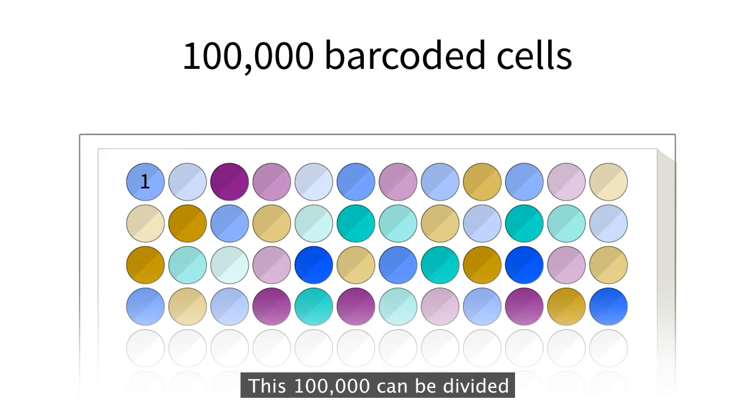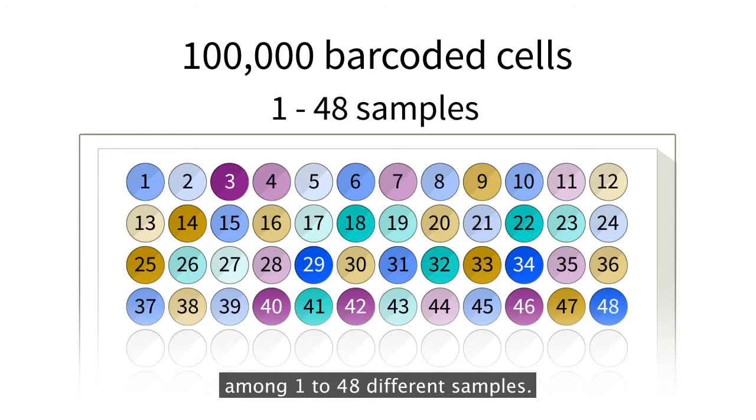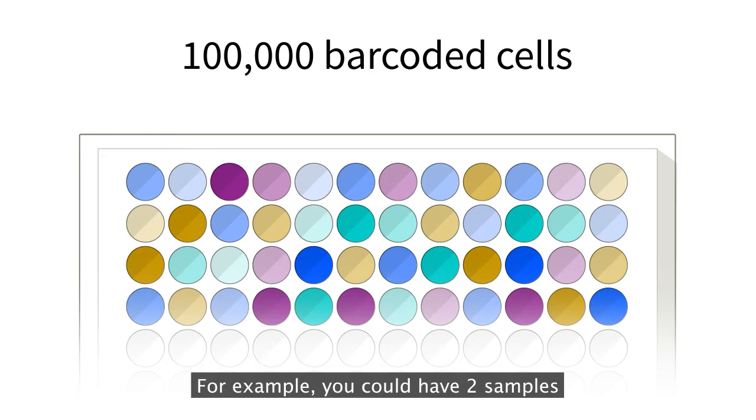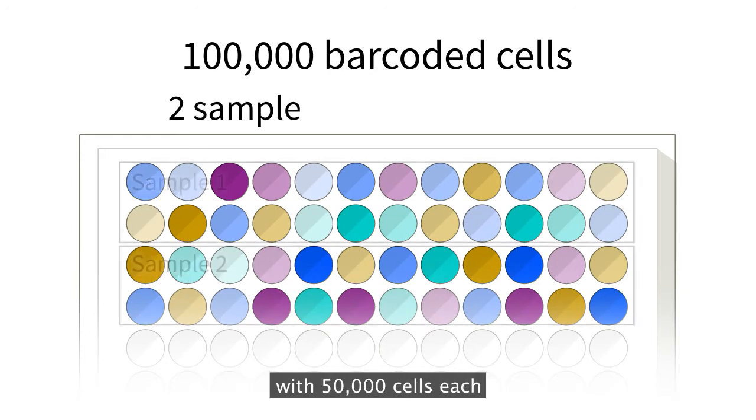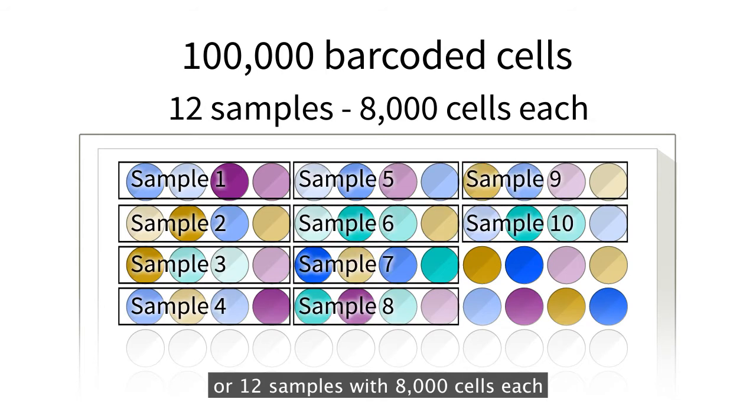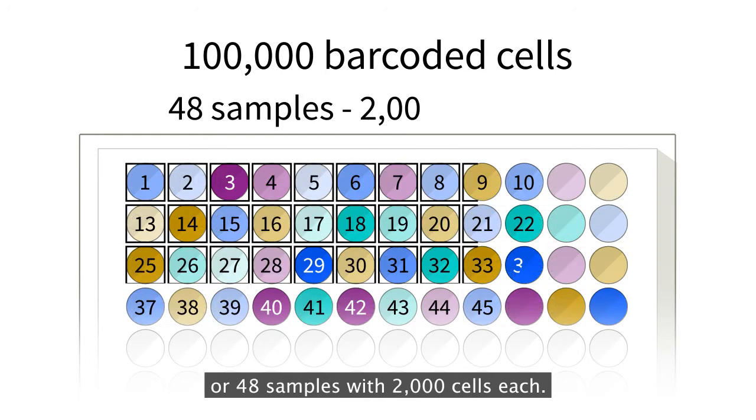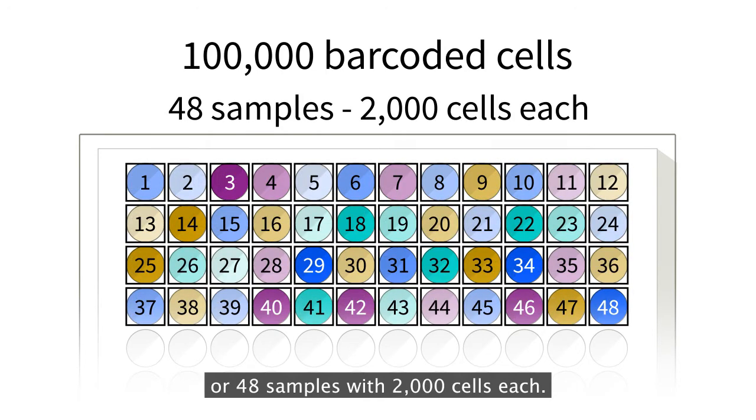This 100,000 can be divided among 1 to 48 different samples. For example, you could have 2 samples with 50,000 cells each, or 12 samples with 8,000 cells each, or 48 samples with 2,000 cells each.